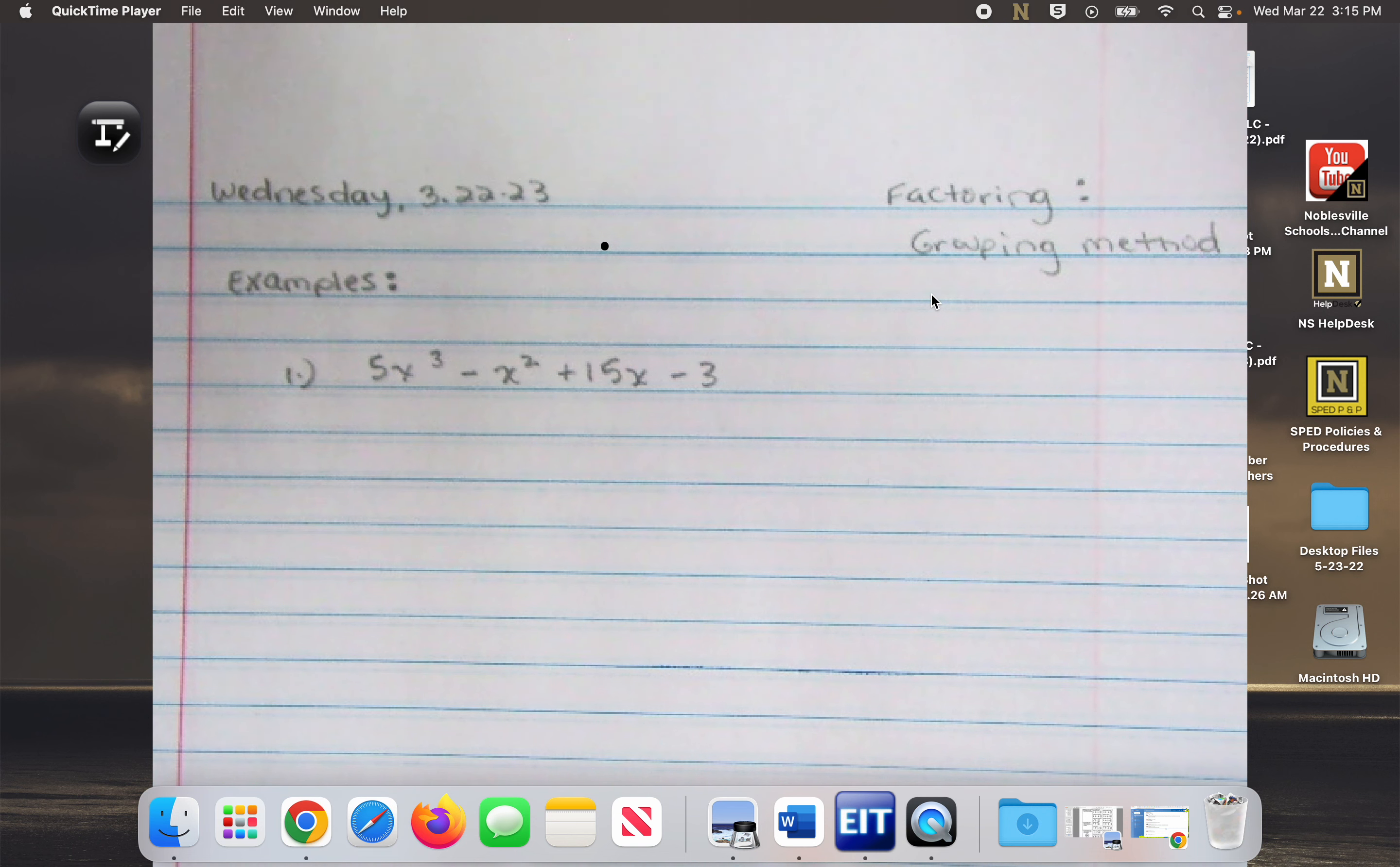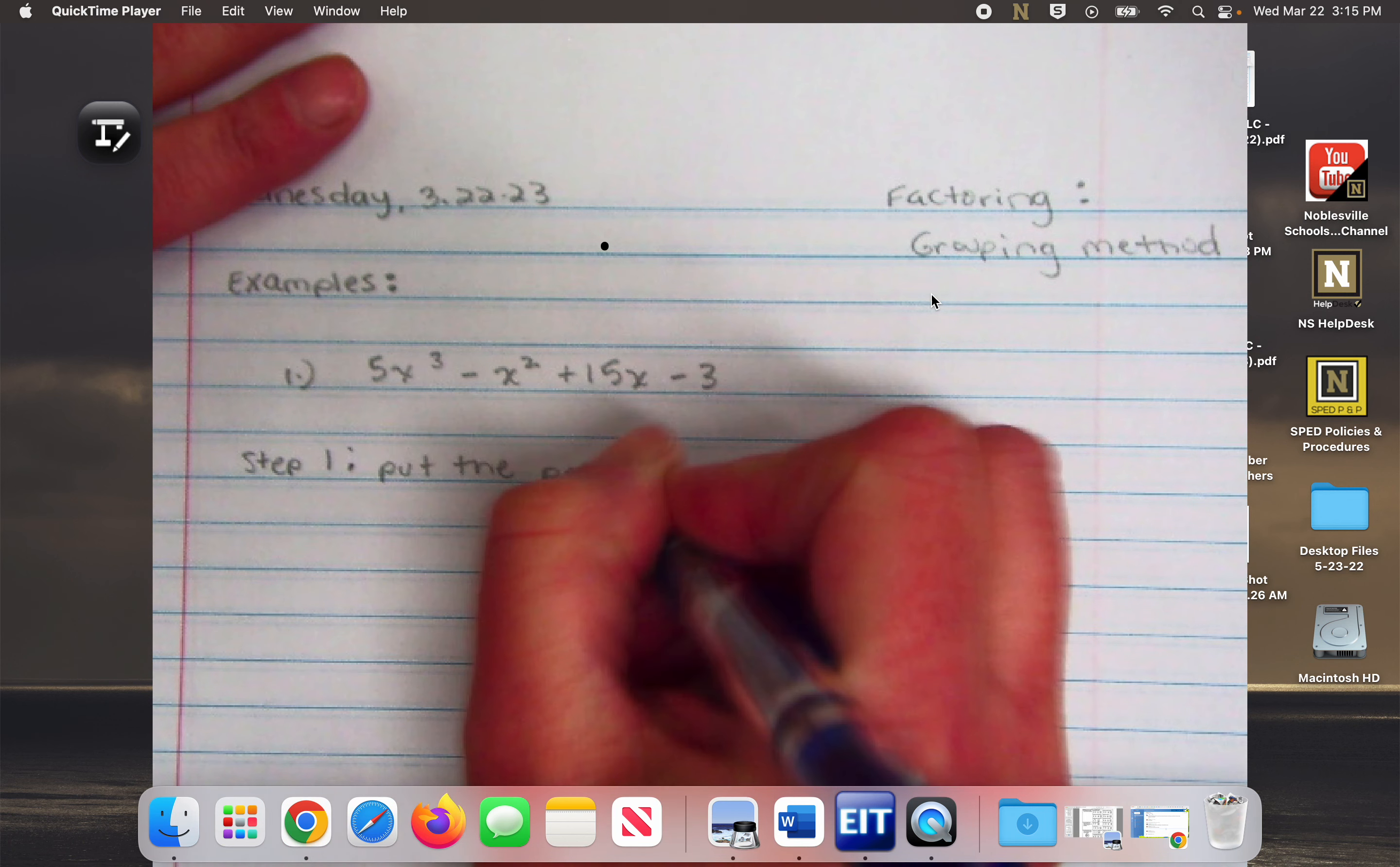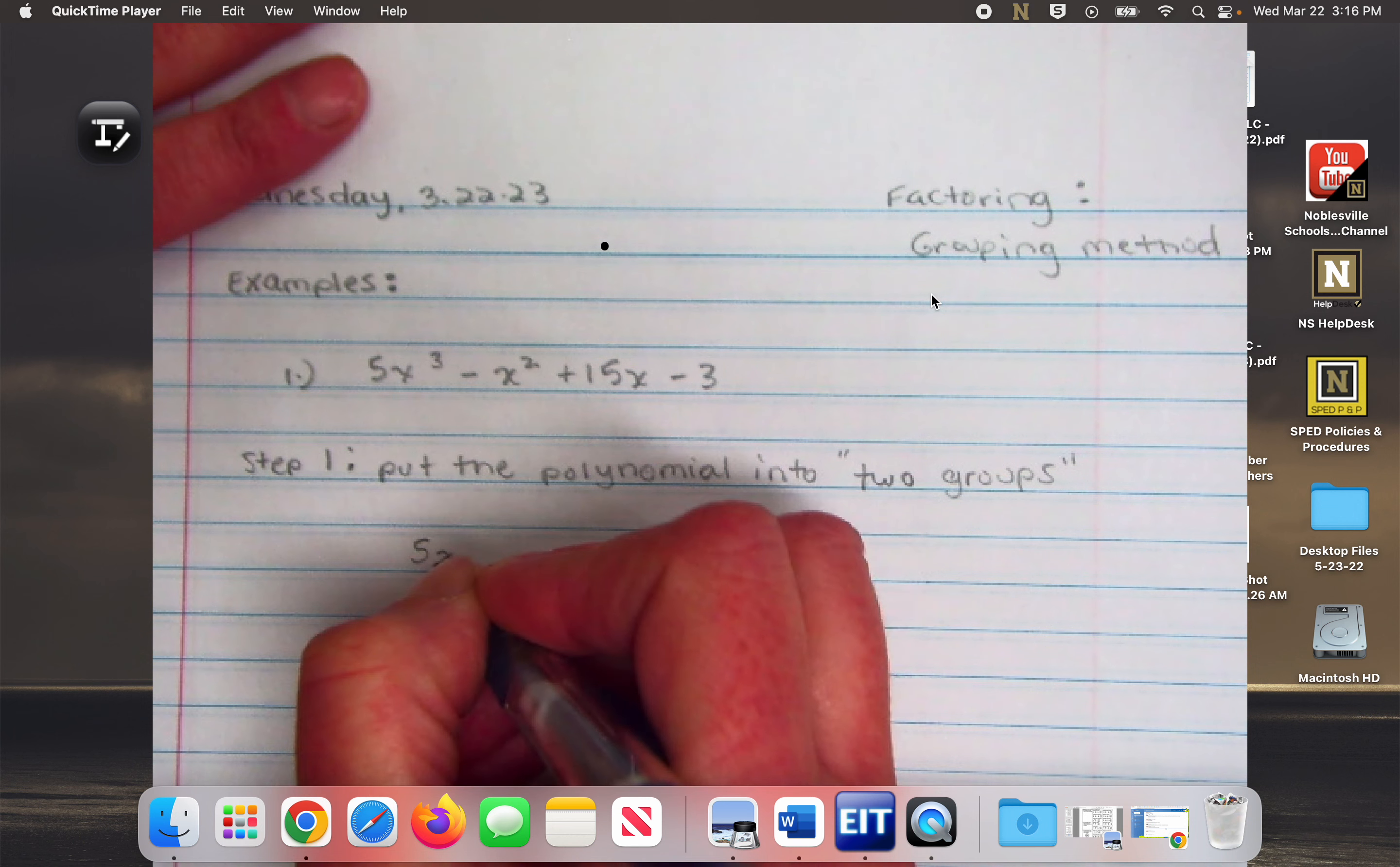It looks a little overwhelming but it's actually pretty easy. It's called grouping because you're going to put the four terms into two separate groups. Step one is to put the polynomial into two groups.